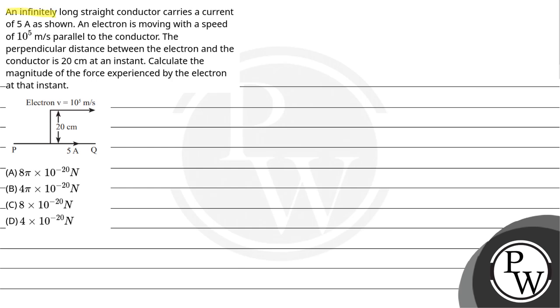Let's read the question. An infinitely long straight conductor carries a current of 5 ampere as shown. An electron is moving with a speed of 10 to the power 5 meter per second parallel to the conductor. The perpendicular distance between the electron and the conductor is 20 centimeter at an instant. Calculate the magnitude of the force experienced by the electron at that instant.